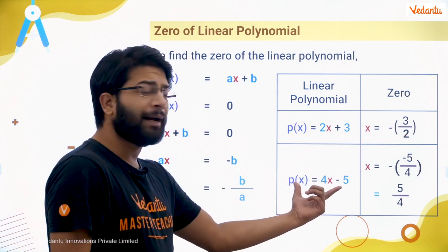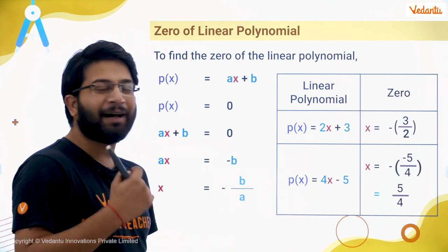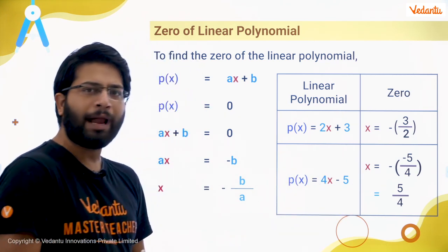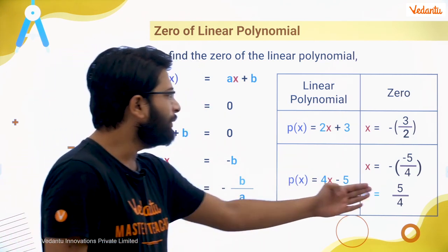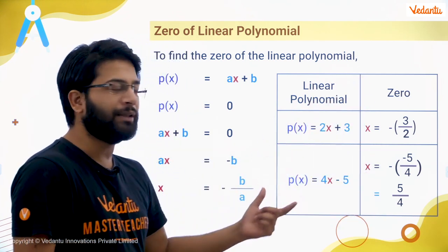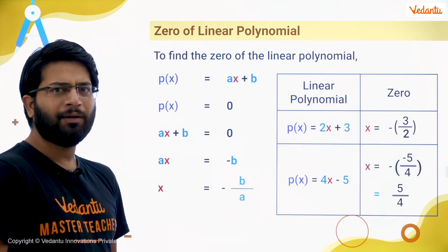For 4x minus 5: if I put 4x minus 5 equal to 0, I will get x equal to 5 by 4, which is nothing but the zero of this linear polynomial.